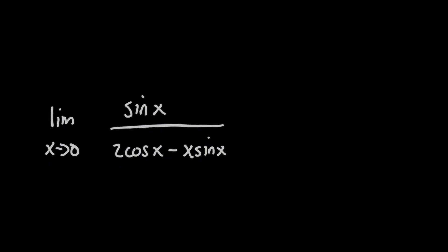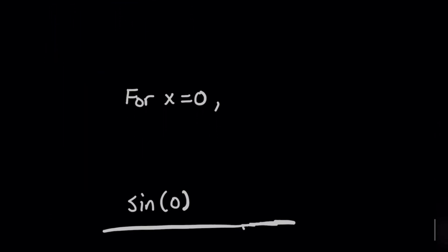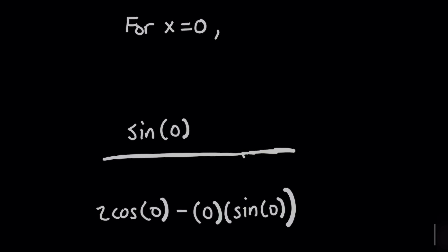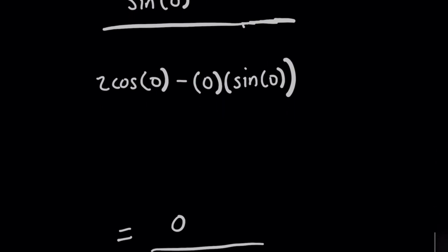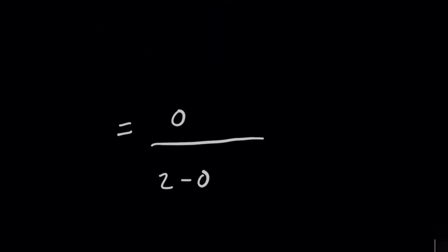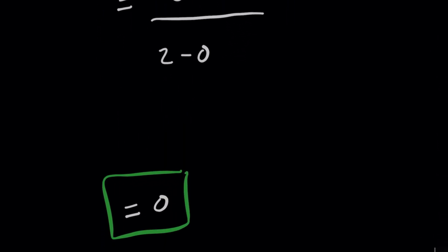Aha, now when I plug in zero, watch what happens. I'm going to simply get sine of zero on the top, which is zero, but now we have to make sure that on the denominator, we are not dividing by zero, right? Because if it's anything that's not zero, that's going to give us our answer, and that's what it turns out to be, which is simply going to be an answer where it converges to the number zero.